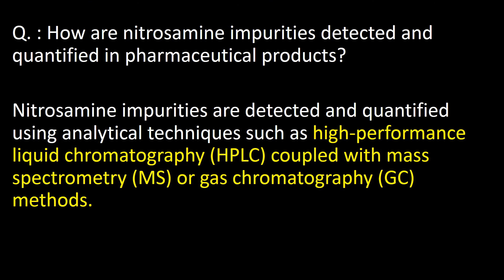How are nitrosamine impurities detected and quantified in pharmaceutical products? Nitrosamine impurities are detected and quantified using analytical techniques such as high-performance liquid chromatography coupled with mass spectroscopy, or gas chromatography methods.